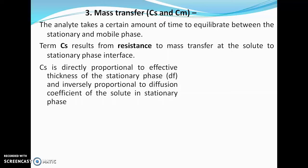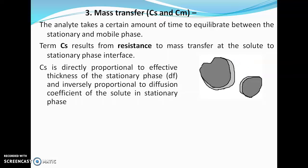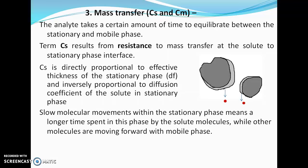Resistance to mass transfer means the solute molecule enters the stationary phase slowly and also exits it slowly. For example, with a smaller stationary phase particle and a larger one: the molecule entering the larger particle moves slowly — resistance to mass transfer is greater — while in the smaller particle the resistance is less. The solute molecule from a smaller stationary phase particle elutes faster, while from the larger particle it elutes slowly.